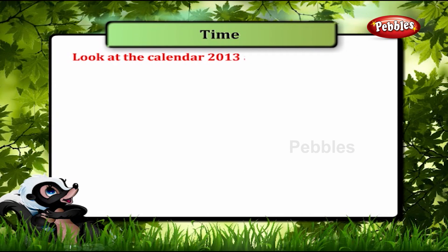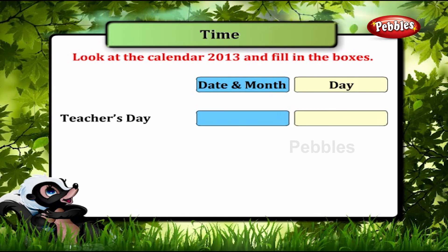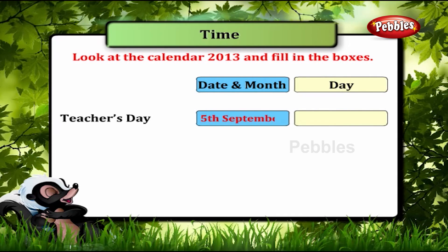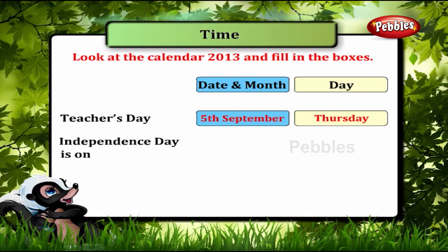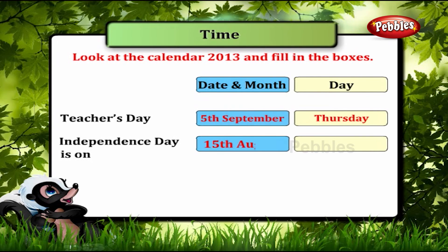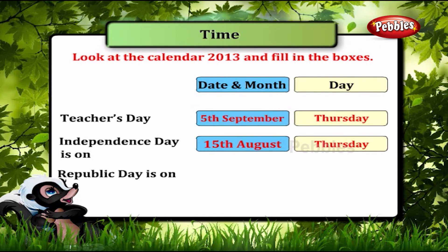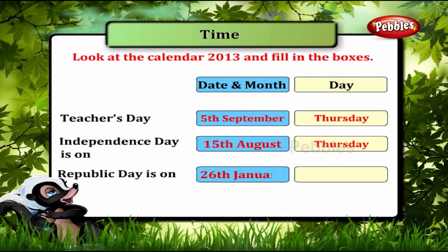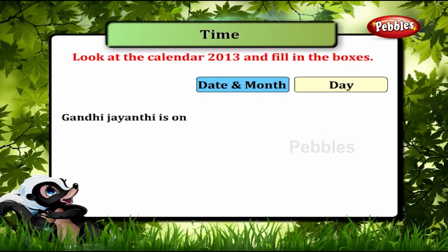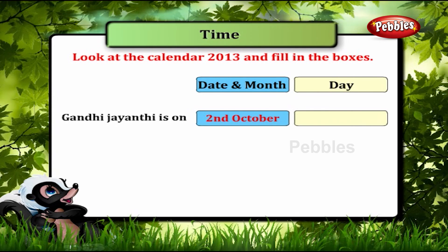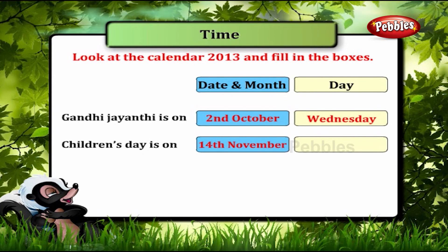Look at the calendar for 2013 and fill in the boxes. Teachers' Day is on 5th September and it is a Thursday. Independence Day is on 15th August and that is a Thursday too. Republic Day was on 26th January and it was a Sunday. Gandhi Jayanti is on 2nd October, a Wednesday. Children's Day is on 14th November, a Thursday.